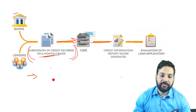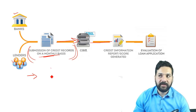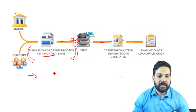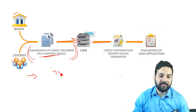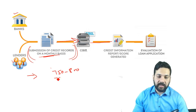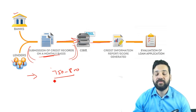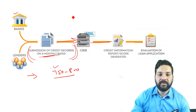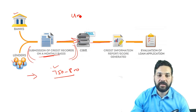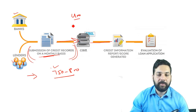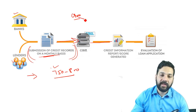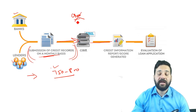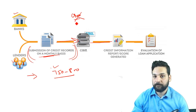If the score is anything around 750 to 800, that record is considered good. If somebody's score is, let's say, 400, the bank is going to reject that application.